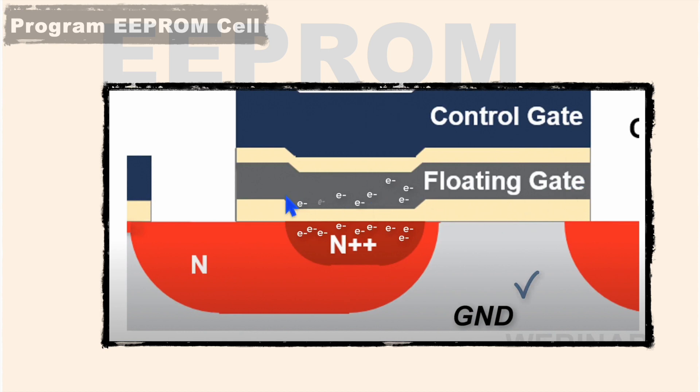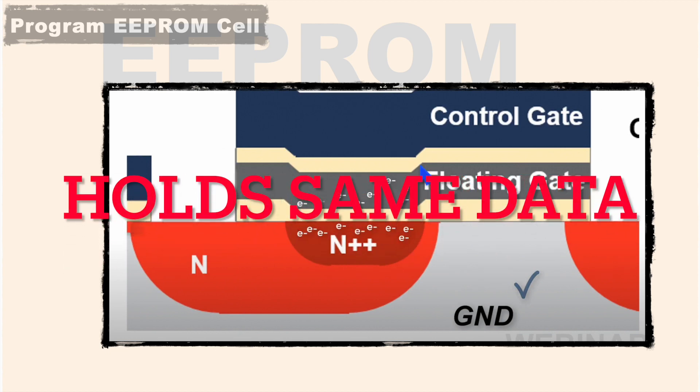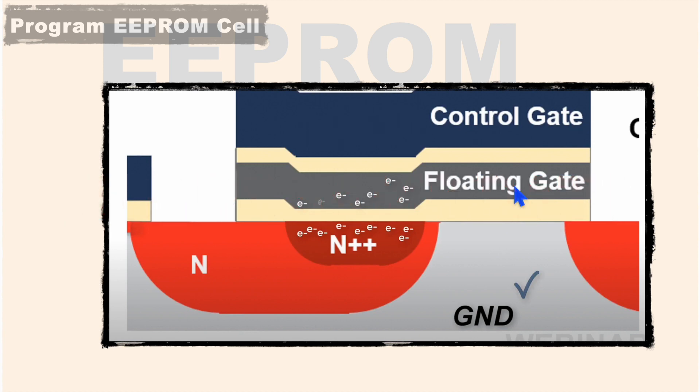And one more feature here: these electrons present in this floating gate will offer higher potential compared to the previous condition when it was not programmed. So once these EEPROM cells are programmed, it will offer a higher barrier, which ensures the same data it will hold when we program other memory cells.